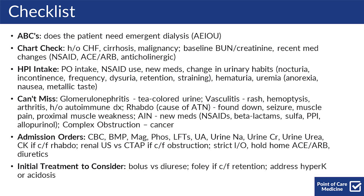Things that you can't miss include glomerulonephritis — look for tea-colored urine — vasculitis, rashes, hemoptysis, arthritis, and a history of autoimmune disease. Also rhabdomyolysis as a cause of ATN, if this patient was found down, had a seizure, or is endorsing muscle pain or proximal muscle weakness.